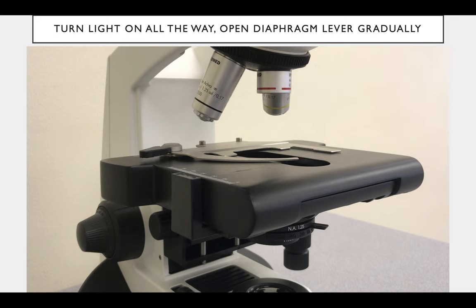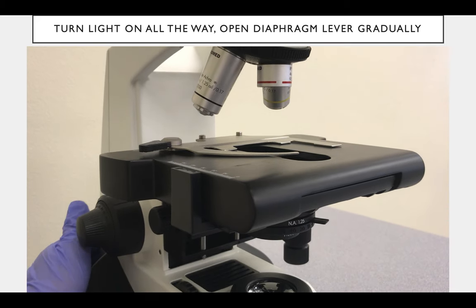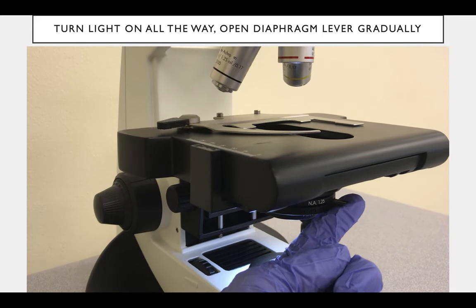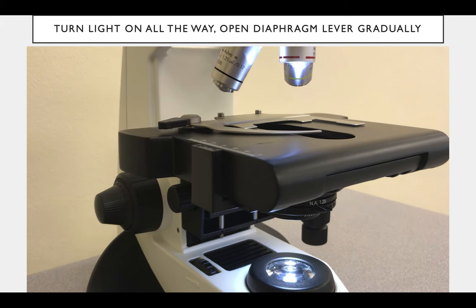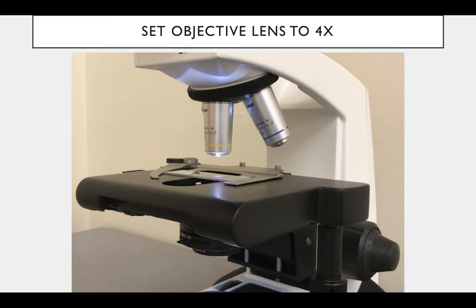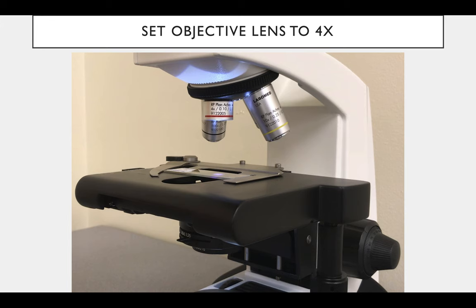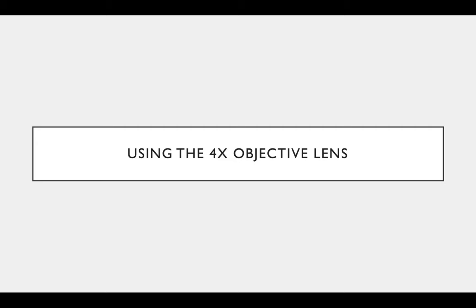So now that the stage is all the way down, we can open that clip and insert our slide. Then we turn the light on and open the diaphragm lever — turn that light on, dim it up, and open the diaphragm lever to let some light into your sample. You always want to start with the 4x objective lens and work your way up, so use that nose piece to switch to the 4x lens. Remember, this objective lens magnifies things four times, in addition to the 10 times from the ocular lenses — that's a total of 40 times magnification.